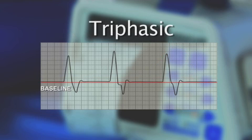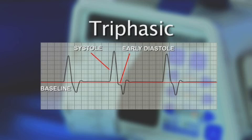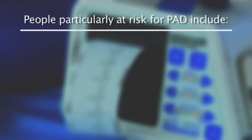The normal triphasic or multiphasic Doppler arterial waveform has an initial steep peak, representing the pulse of high flow during cardiac systole. The second phase, moving downward, indicates the reverse flow in early diastole. The third phase is a small peak that signifies the forward flow during late diastole.